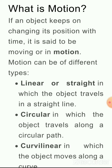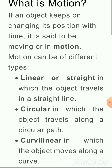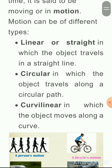Motion can be of different types. For example, the first type is Linear or Straight motion, in which the object travels in a straight line. यानि कि जब कोई object सीधी line में travel करता है, that is called Linear or Straight motion.